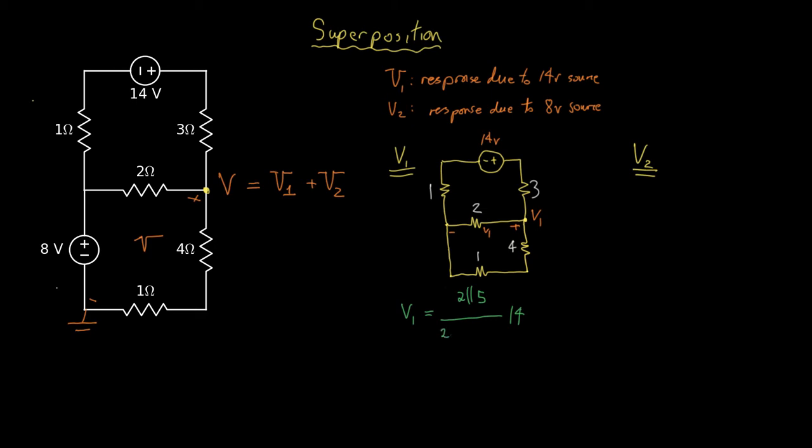And that resistor 2 in parallel with 5, the voltage actually has to go across both the 1 ohm resistor and the 3 ohm resistor. As an aside over here, we can calculate 2 in parallel with 5 is 10 sevenths.